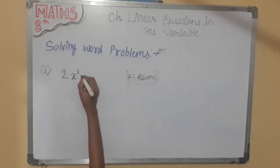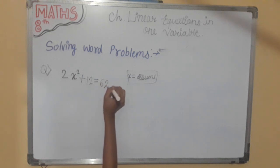Increased by 12 means plus 12. Increased by 12 means plus 12. Gives or is 62. Like this the equation is framed.